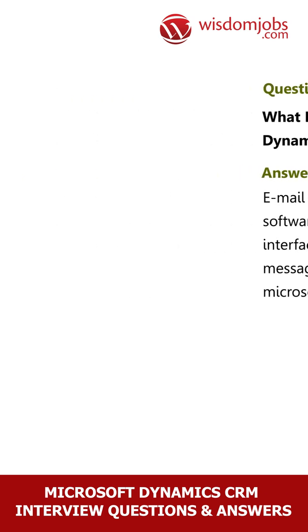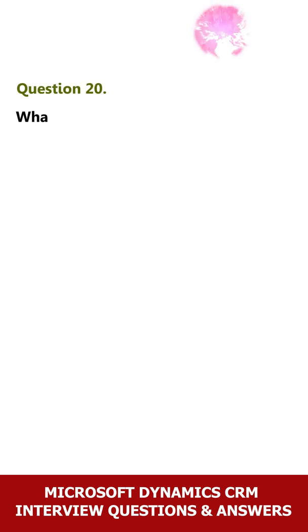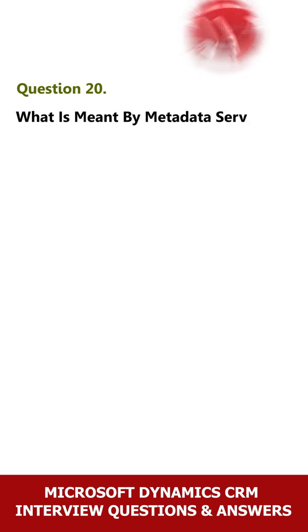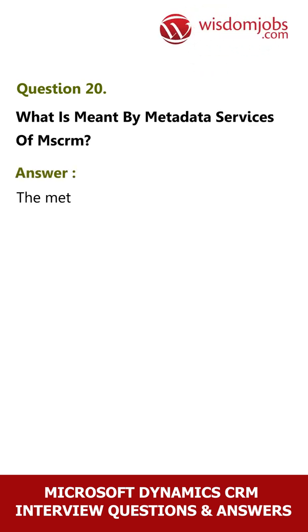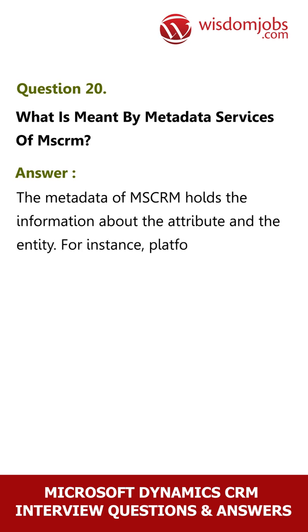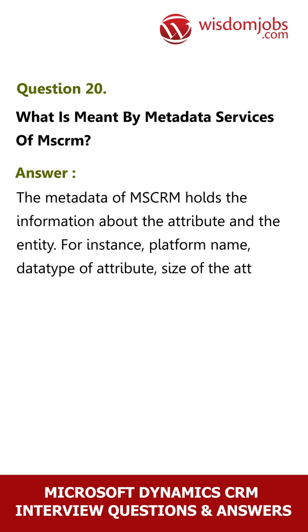Question 20: What is meant by metadata services of MSCRM? Answer: The metadata of MSCRM holds information about the attributes and entities — for instance, platform name, data type of attribute, size of the attribute, display name, etc.